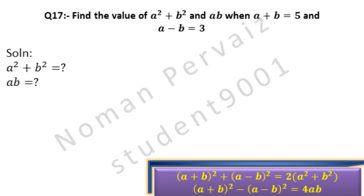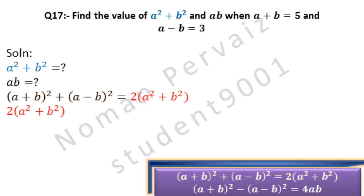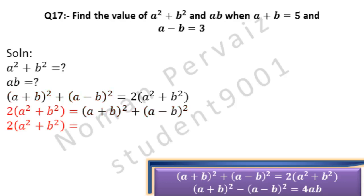Next we will apply the first formula. As we have to find a² + b², we write the right-hand side on the left-hand side. So we write: 2(a² + b²) = (a + b)² + (a − b)². Next we will replace the values given in the question into this formula.